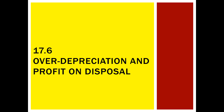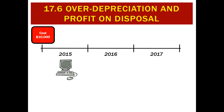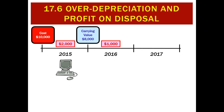Over-depreciation will cause a profit on disposal. Let's look at what we mean. We've got a $10,000 computer and at the start of its useful life it was 2015. In the first year we've depreciated $2,000, which gives us a carrying value of $8,000. We then depreciated $1,000, so we're using reducing balance here.